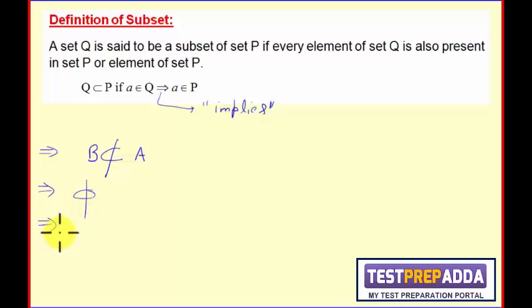Now, if Q is subset of P means every element of Q is in set P, right? But every element of P may or may not be in set Q. But if every element of P is also in set Q means P will also be a subset of Q, or we may say P equal to Q. So mathematically we can define equal sets as...